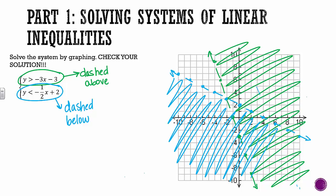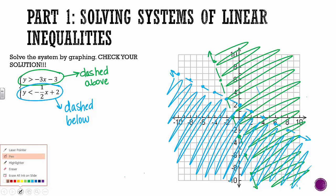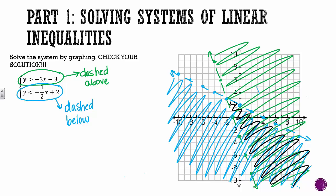So now remember, we're looking for solutions to the system, solutions that work for both inequalities. So where that's true is this area right in here, where it's both blue and green. So to simplify that, I'm going to have you write an S, S for solutions, right in here.